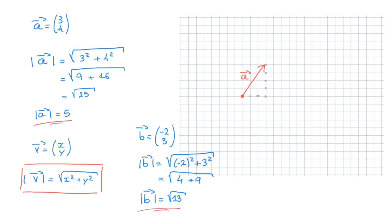Finally, the magnitude of vector b is equal to the square root of 13, and we stop there. We cannot simplify the square root of 13 any further. If you wish, you can check with a calculator — rounding to two decimal places, the square root of 13 is equal to 3.61. And there we have it. That's how we can calculate the magnitude, also known as modulus, of a vector. And that's it for this tutorial.